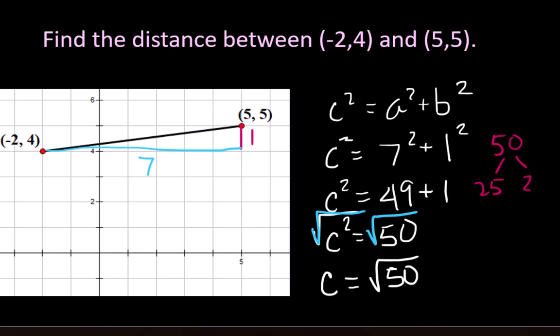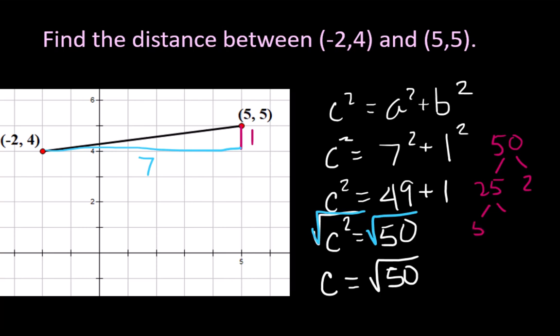50 is 25 times 2 and 25 is 5 times 5. So this square root of 50 is really 5 times 5 times 2. And anything that appears in here twice can come out. So we end up with our final answer of c equals 5 square root of 2.